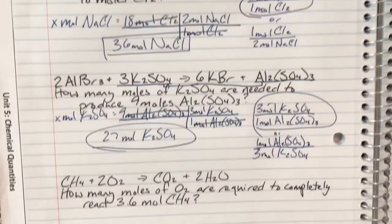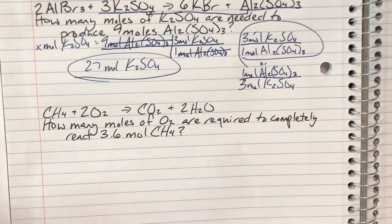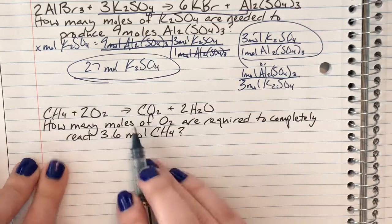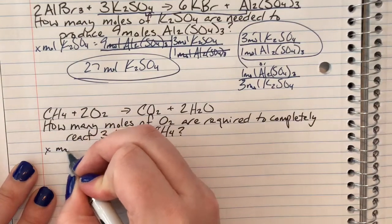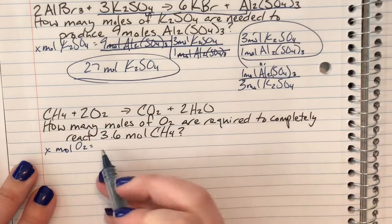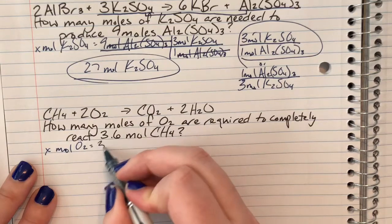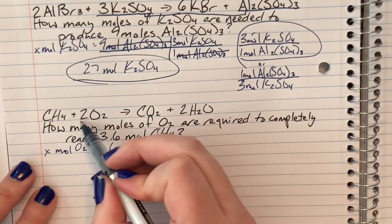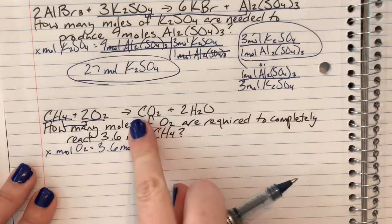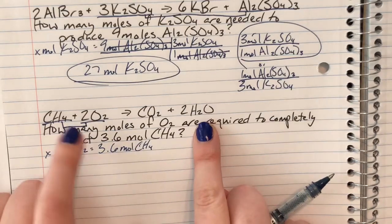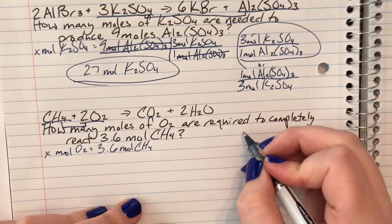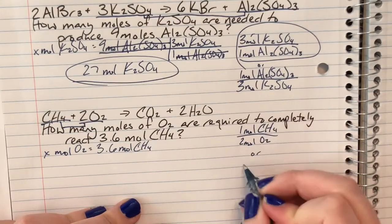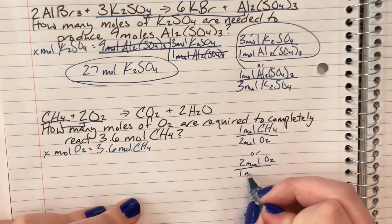I'm going to move on to this very last problem — the combustion of methane. I'll read through my problem and translate English to math. It says 'how many moles of O₂,' so that's x moles O₂; 'are required to completely react' is my equal sign; and the number given is 3.6 moles of methane, CH₄. I'll visually connect oxygen and methane — the only two compounds I care about. I do not care about carbon dioxide or water in this reaction at all. For every 1 mole of CH₄ there will be 2 moles of O₂ required, or for every 2 moles of O₂ I need 1 mole of CH₄.